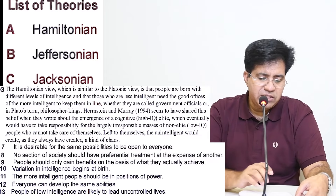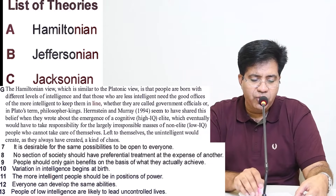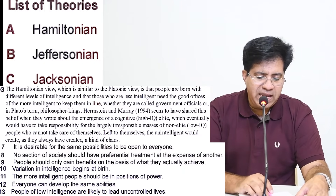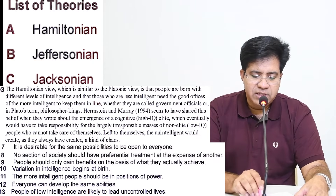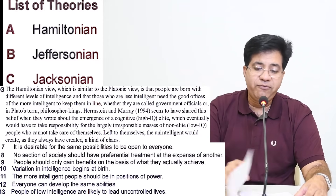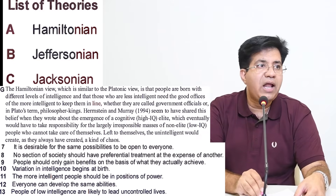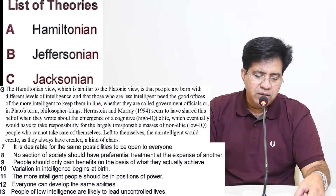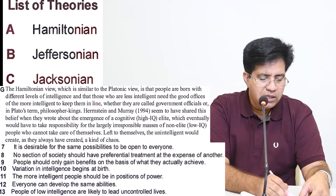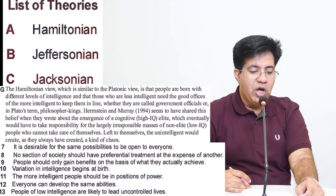Question 13: 'People of low intelligence are likely to lead uncontrolled lives.' From paragraph G: 'Left to themselves, the unintelligent would create as they always have created a kind of chaos.' Uncontrolled lives = kind of chaos. So question 13 answer is A. We've now answered three Hamiltonian questions; only four questions remain.